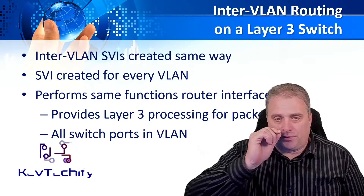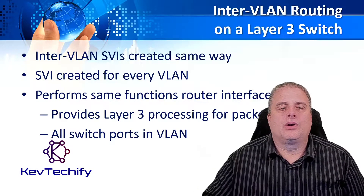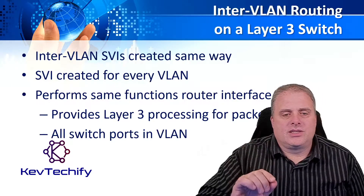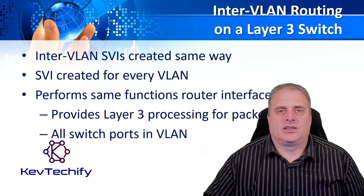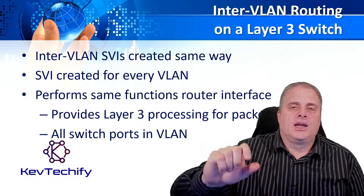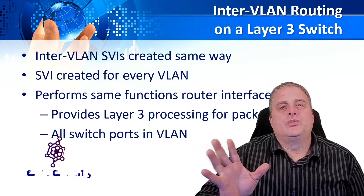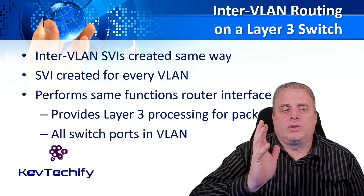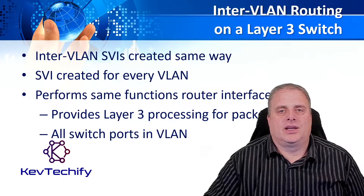The difference is, on a layer 2 switch, we only create one switch virtual interface to allow you to manage it. But on a layer 3 switch, each VLAN needs to have its own SVI. That way, the layer 3 switch, when it does its routing, can route to those switch virtual interfaces. It performs the same functions as the router interface — it provides layer 3 processing for packets, processes them, gets the information, decides how to route it, and all the switch ports need to be in that VLAN.